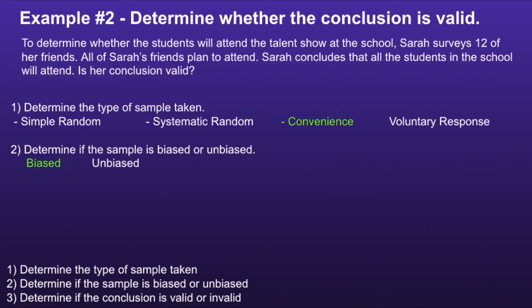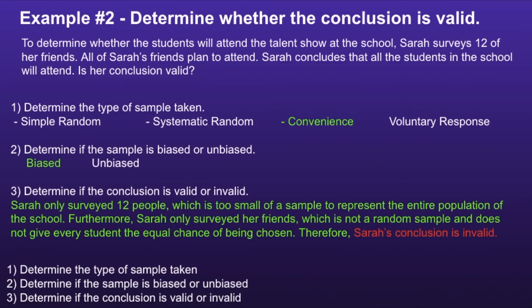Step three: determine if the conclusion is valid or invalid. Sarah only surveyed twelve people, which is too small of a sample to represent the entire population of the school. Furthermore, Sarah only surveyed her friends, which is not a random sample and does not give every student an equal chance of being chosen. Therefore, Sarah's conclusion is invalid.